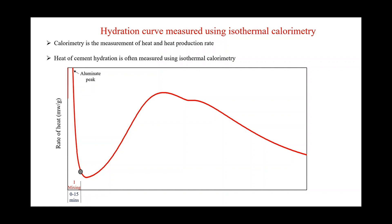At the same time, the reaction of aluminate with water also consumes sulfate, and C-A-S-H (ettringite) is formed. Ettringite is a gel-like material that builds up around the unreacted cement grains. This ettringite gel limits the access of water to the grains, thereby controlling the rate of aluminate reaction. Since water is no longer available to the grains, not much reaction occurs, and you see a decline in the heat.